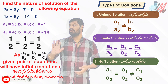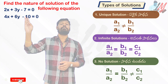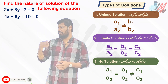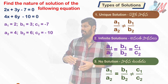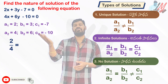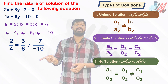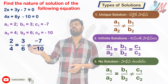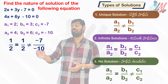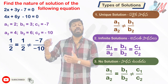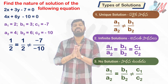Now let me take one more example for no solution: 2x plus 3y minus 7 equal to 0 and 4x plus 6y minus 10 equal to 0. Comparing a1 by a2 gives 2 by 4 equals 1 by 2, b1 by b2 gives 3 by 6 equals 1 by 2, but c1 by c2 gives minus 7 by minus 10, which cannot be simplified to 1 by 2. Since a1 by a2 equals b1 by b2 but is not equal to c1 by c2, we have no solution.